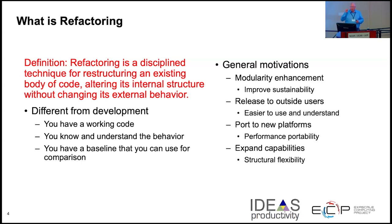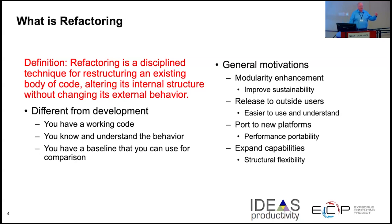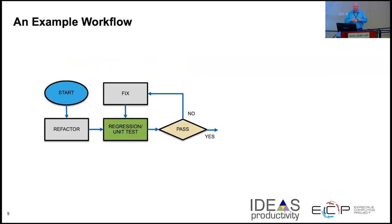Motivations for doing this: you want to improve modularity, make it easier for outsiders to understand and use the code, and adapt to new platforms. That last one requires some thought — it's not literally about expanding capabilities, because that's development work. But making the code easier to expand capabilities can be a refactoring process — you're restructuring existing capabilities so you can add more capabilities more easily down the road.